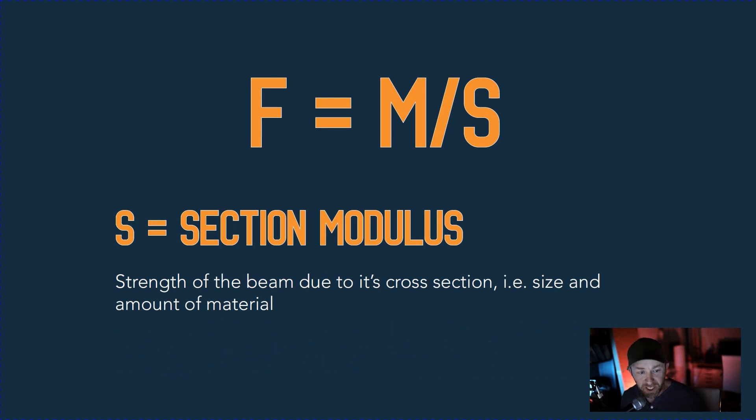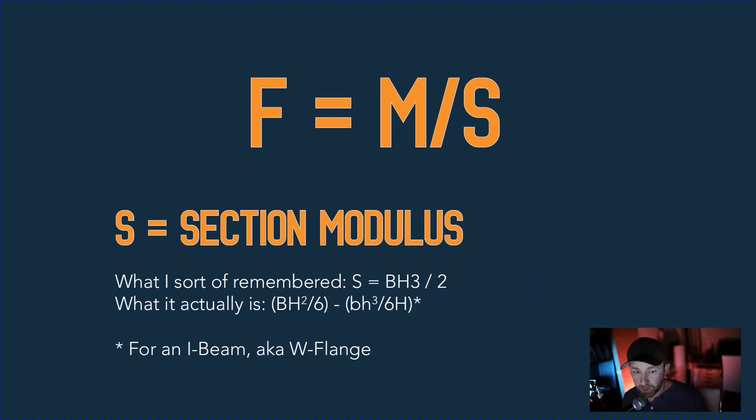This is the strength of the beam due to its cross section, i.e. its size and the amount of material. There's also formulas for this. And I had a question, multiple questions on the exam on my PPD and PDD that sort of use this formula. And I remember one of them, I thought I had to solve the equation. And it didn't give me everything I needed. But I sort of remembered that there was an equation for section modulus. And so I sort of remembered that it was like S equals BH3 over 2 or something like that, which it's not. It actually is BH squared over 6 minus BH cubed over 6H for an I-beam. And there's no way you're going to have to actually know that or memorize it. So if you are doing something similar on your exam and you're trying to remember a formula you learned in like structures 101, you're probably looking at the question wrong. You're probably missing the easy answer because it's not about doing the math.